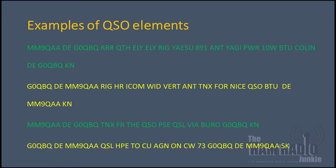The yellow station returns with information about his rig — an ICOM with a vertical antenna — and thanks him for a nice QSO, returning it back. The green station responds with thanks for the QSO and asks to QSL via the bureau, meaning send a card. The yellow station finishes with QSL as in 'all copied', hopes to see him again on CW — meaning Morse — sends 73 as in 'best wishes', his call sign, and ends it with SK.